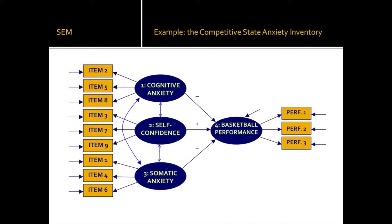This was a subset of a real model I ran in my research, which predicted basketball performance based on three anxiety predictors. Each of those predictors was a factor made up of three items, all correlated with each other. The correlations between self-confidence and the two anxiety factors were hypothesized to be negative, with confidence predicted to lead to better performance while anxiety variables were predicted to lead to worse performance.